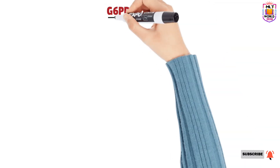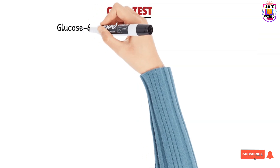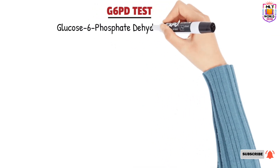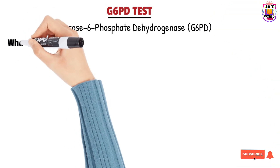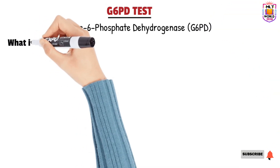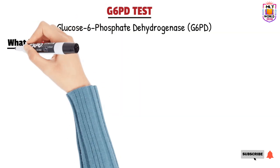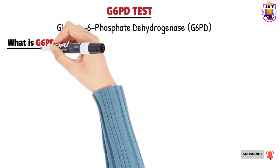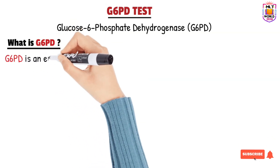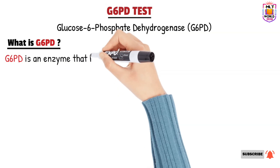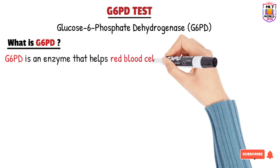G6PD stands for glucose-6-phosphate dehydrogenase. G6PD is an enzyme that is very important for red blood cells. Red blood cells are very important cells in our body, and their function is to deliver oxygen to each cell.